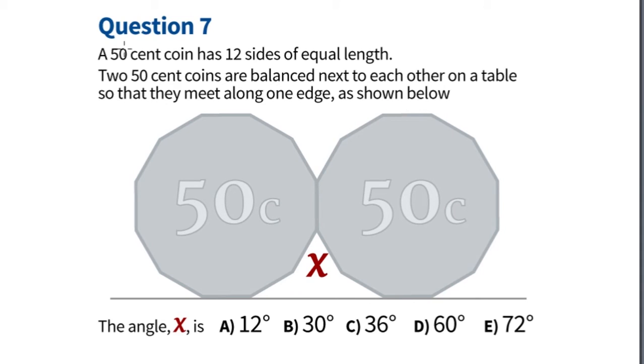Here's a problem submitted by a user named Mockbelly. We've got a 50 cent coin that has 12 sides of equal length. Two 50 cent coins are balanced next to each other on a table so they meet along one edge as shown below.